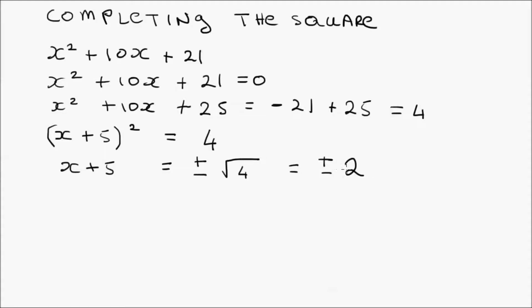We want to write this quadratic as factors. We have two cases: plus 2 and minus 2. For the first case, x plus 5 equals plus 2, so we bring the 2 across and it becomes a minus: 5 minus 2 equals 3. That's one of the factors.